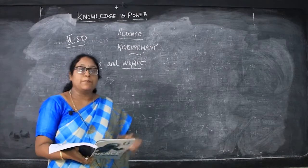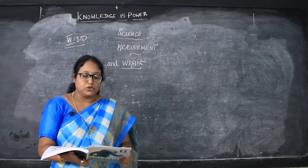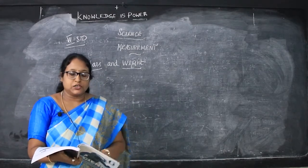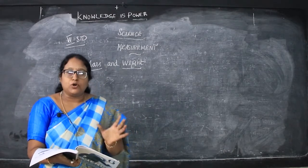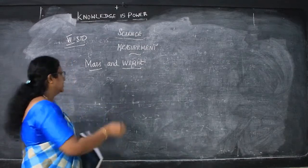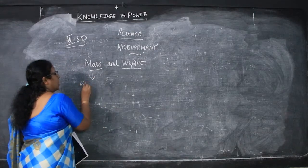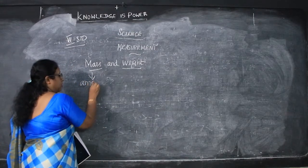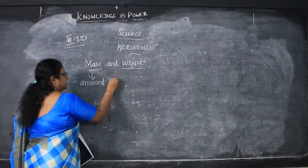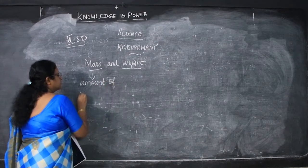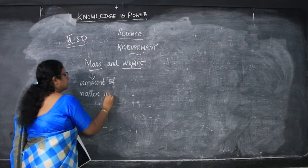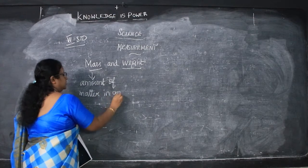The mass is a measure of the amount of matter in an object. Mass is called as the amount of matter in an object.